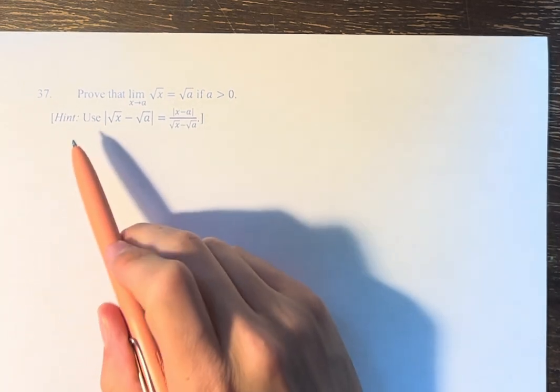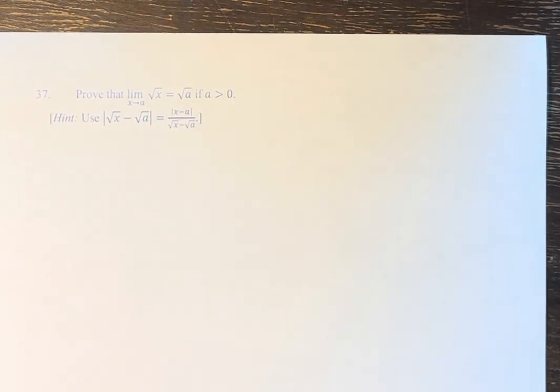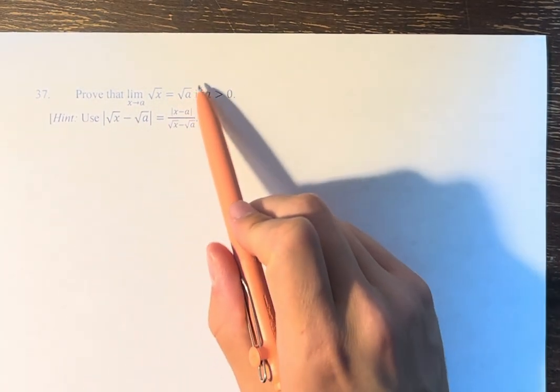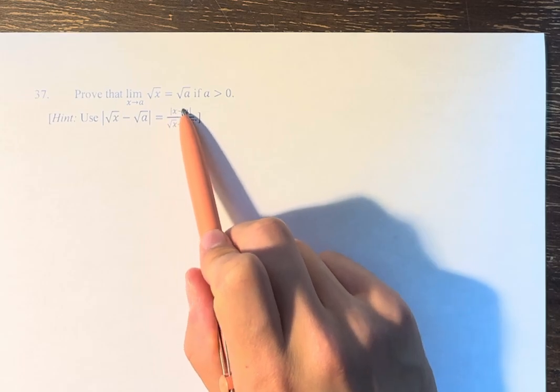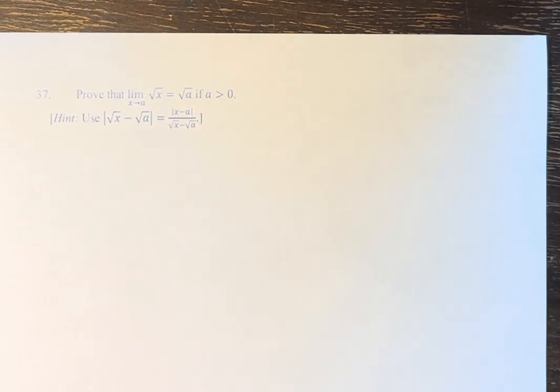What we have to do is use the fact that the absolute value of √x minus √a is equal to the absolute value of x minus a over the square root of x plus the square root of a.